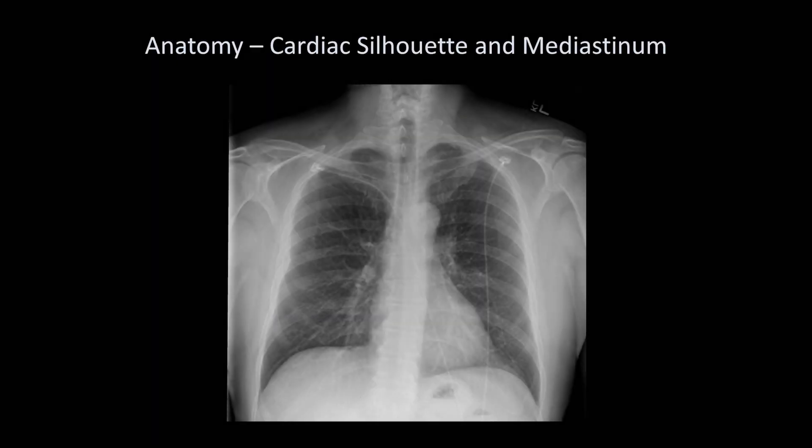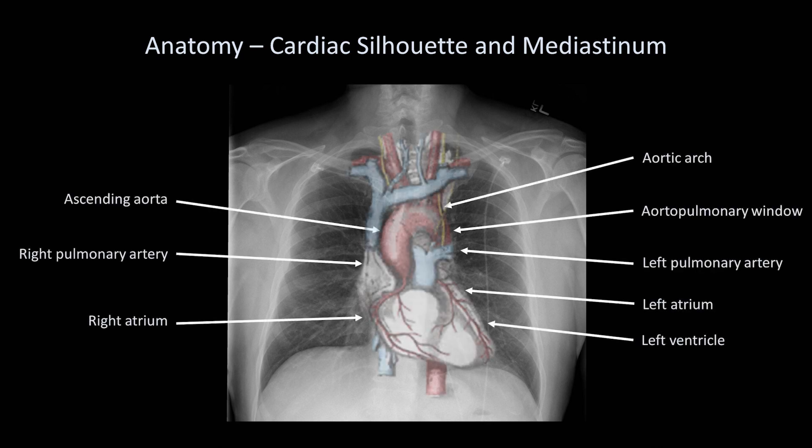Let's take a look at the anatomy of the cardiac silhouette and mediastinum that was first introduced in lesson two. For this lesson, it will be important to remember the structures listed here which comprise the different segments of that silhouette.